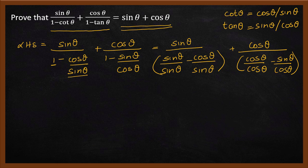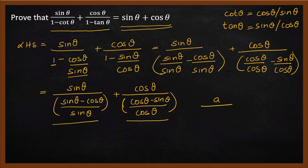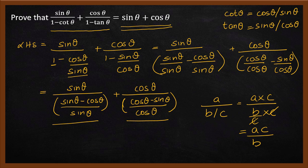Let's simplify the denominator. We have an expression in the form a divided by b divided by c format. To solve a divided by b divided by c, the numerator is a times c divided by b. So we multiply numerators and denominators accordingly and simplify.